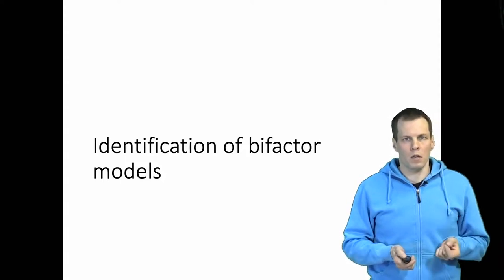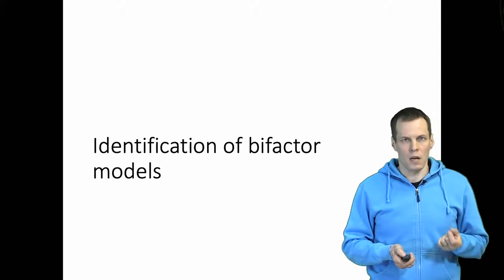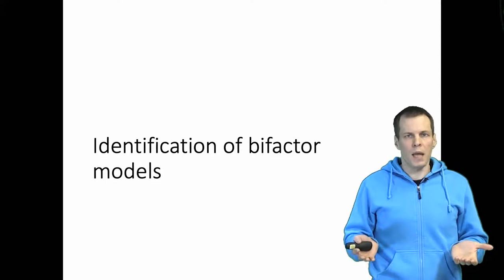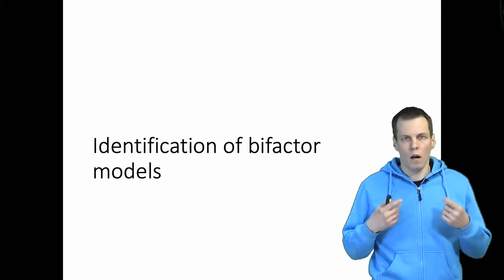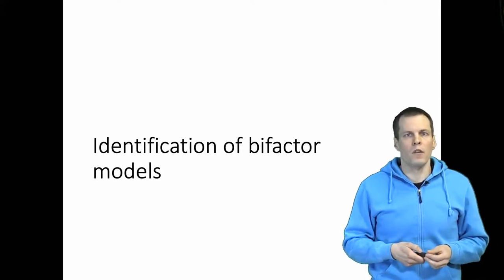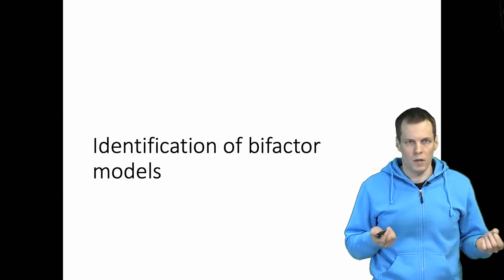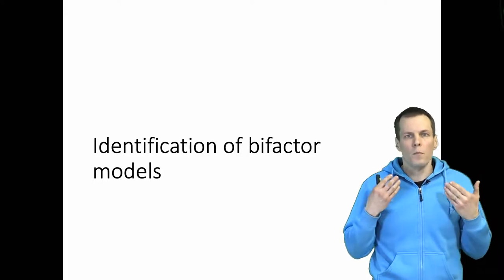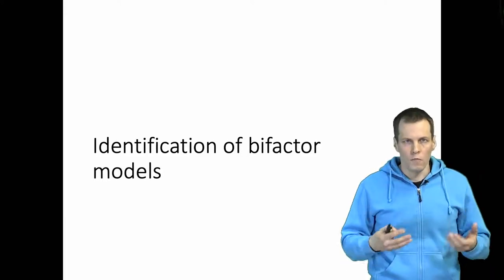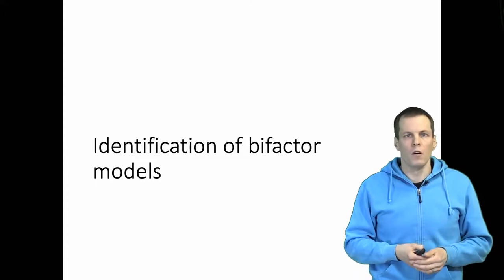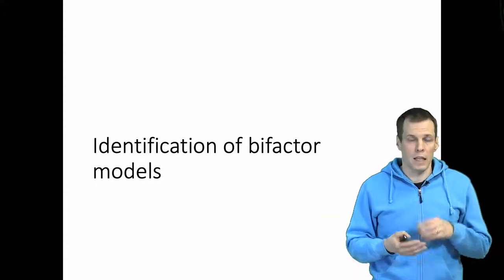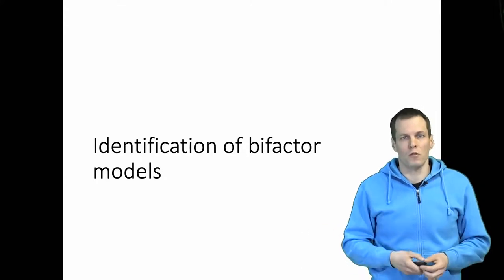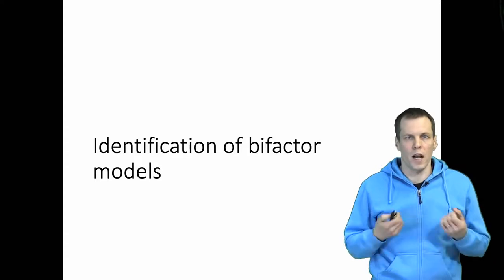One challenge with these kinds of models is that their identification status is not clear. They are not always identified and may be empirically under-identified. Unfortunately, as far as I know, there are no rules that you can apply to establish the identification of these models. So if you need to show that your model is identified, you must either prove it yourself, or rely on certain special cases that have been proven. This creates a challenge for an applied researcher.